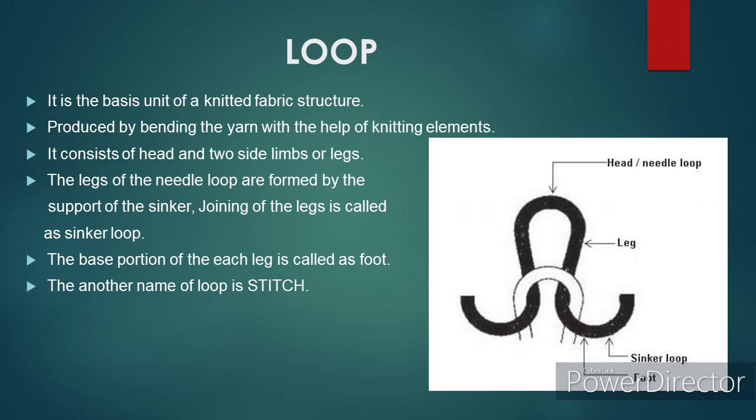A loop means a shape produced by a curve that bends round and crosses itself. In knitting, it is the basic unit of a knitted structure. It is produced by bending yarn with the help of some knitting elements, namely needle and sinker. According to the knitting element which is forcing the yarn to bend, loops may be termed as needle loop and sinker loop.